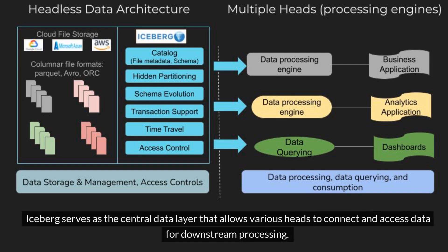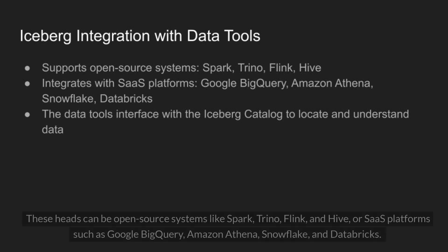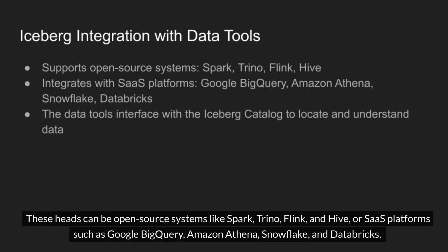Iceberg serves as the central data layer that allows various heads to connect and access data for downstream processing. These heads can be open-source systems like Spark, Trino, Flink, and Hive, or SaaS platforms such as Google BigQuery, Amazon Athena, Snowflake, and Databricks. They interface with the Iceberg catalog to locate and understand the data.